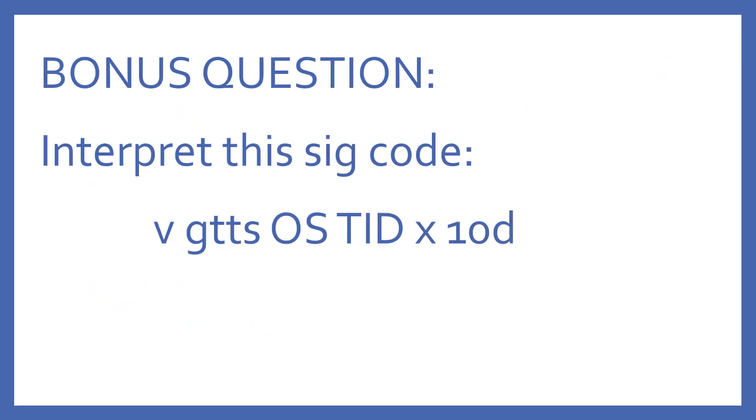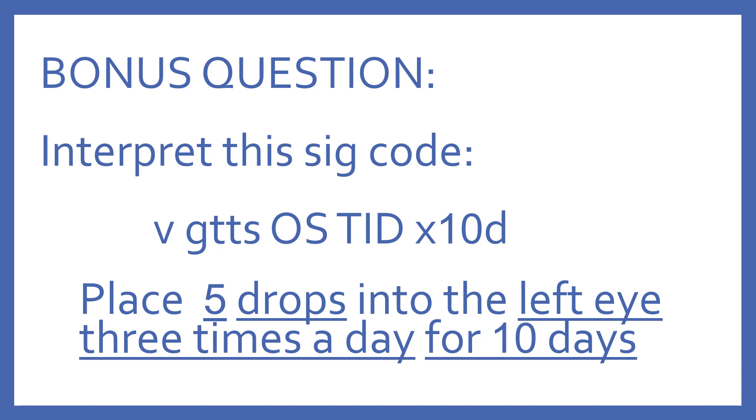And now we have a bonus question. Interpret this SIG code. VGTTOSTID times 10D. This means place five drops into the left eye three times a day for 10 days. So V is the Roman numeral for five. GTTS means drops. OS means left eye. TID is three times a day. And times 10D is for 10 days.